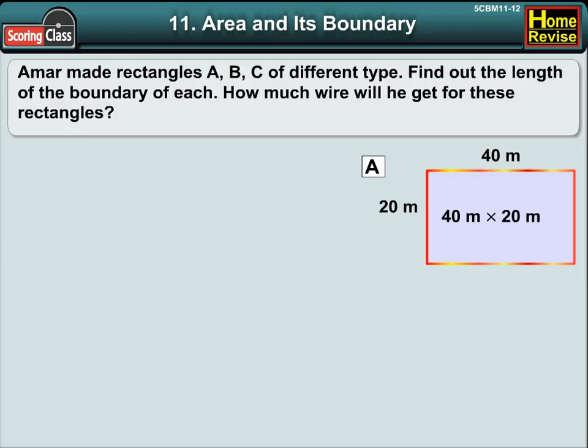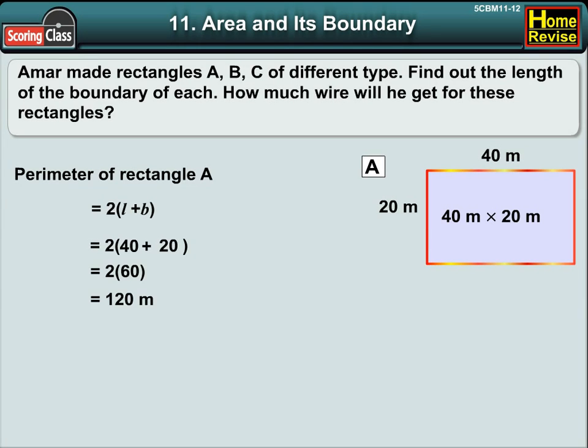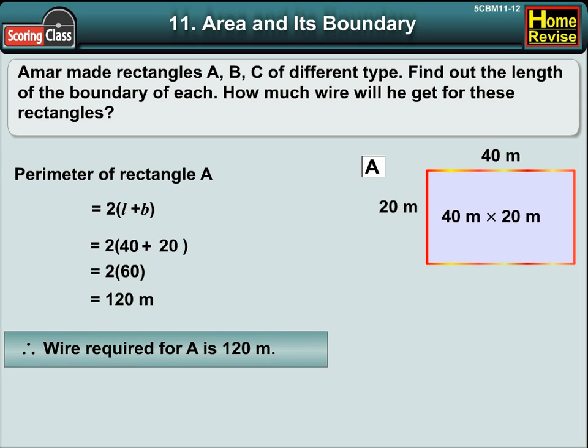For A, perimeter of the rectangle A is 2 into length plus breadth. If we put in the values, it is 2 into 40 plus 20, which is 2 into 60. So it is equal to 120 meters. Therefore wire required for rectangle A is 120 meters.